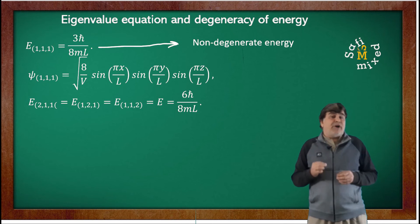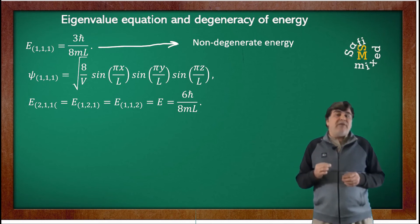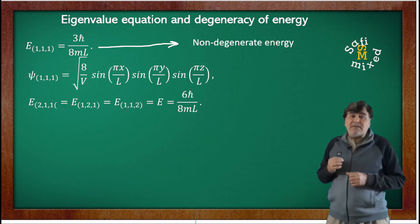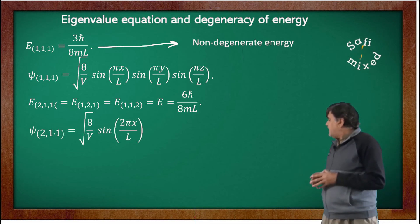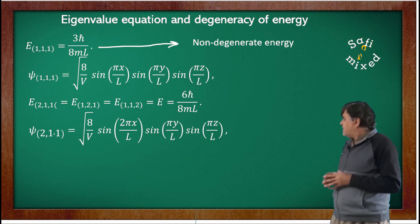In this case, for every set of values we have a different wave function. For example, the wave function ψ_{2,1,1} can be written as: